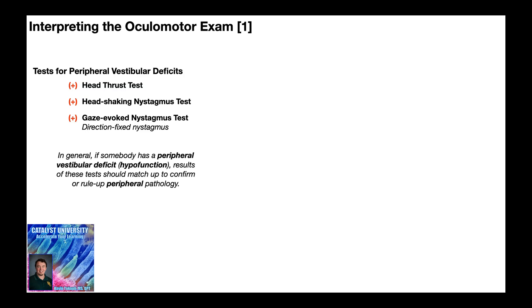In general, if somebody actually has a hypofunction, the results of these tests should match up to confirm or rule up that pathology. So if somebody has a hypofunction and the head thrust test is positive, most likely the other two tests are also going to be positive. They should match up with each other and indicate the hypofunction on the same side — all right-sided, all left-sided, or in the rare case, both.